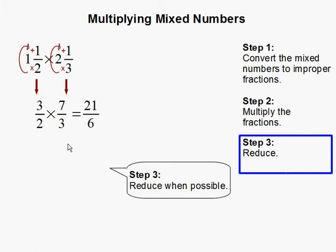Step 3. Reduce when possible. So 21 over 6 is an improper fraction. So we have to reduce that back to a mixed number. So 6 going to 21 3 times. And 3 is left over. And our denominator remains the same.